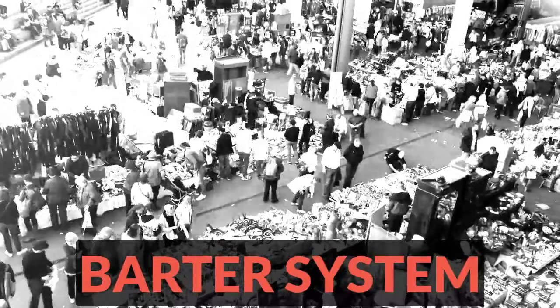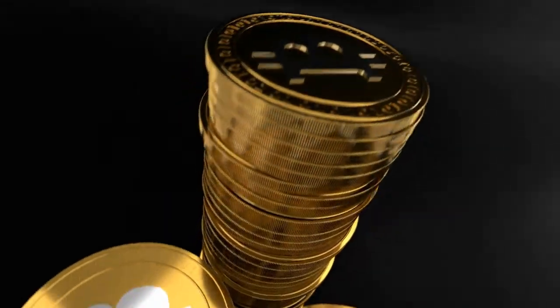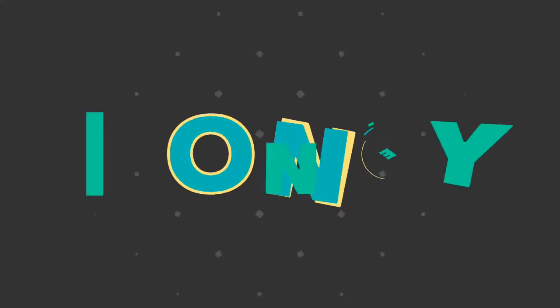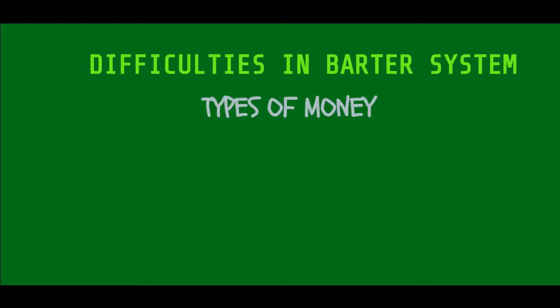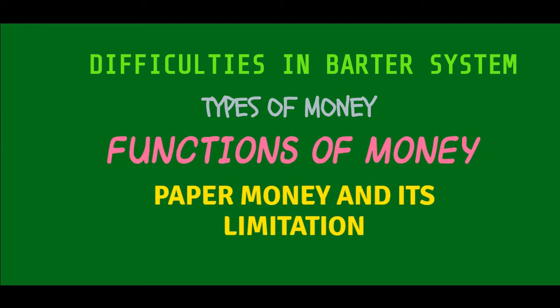However, this system had certain difficulties that made it lead to the rise of coins and currencies. Welcome to the Sagararaw channel, friends. Let's talk about money. This video will explain the difficulties in the barter system, types of money, functions of money, paper money and its limitations, and what qualities good money should have.